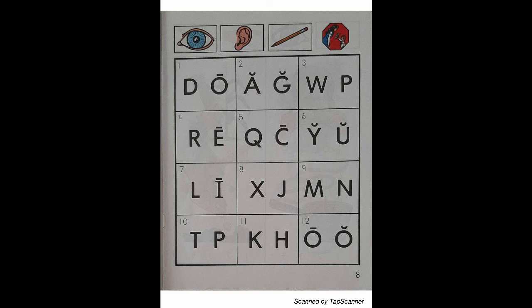Look at the letters in box 8. Listen as I say the sound of the letter. X — Ox — X. With your pencil, circle the letter that reads X.